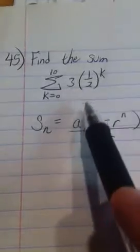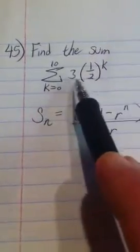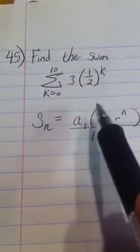Okie dokie. So here's our formula for the sum of a geometric sequence. I can tell it's a geometric sequence because it's in this form with something to a power.